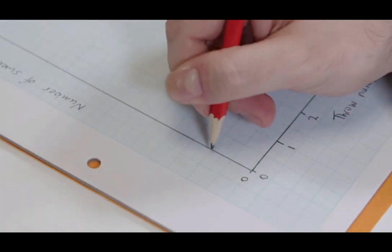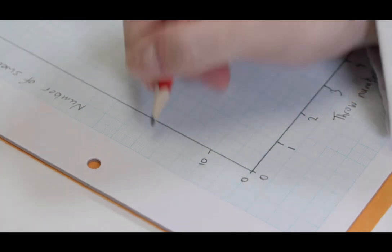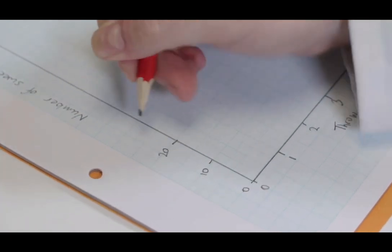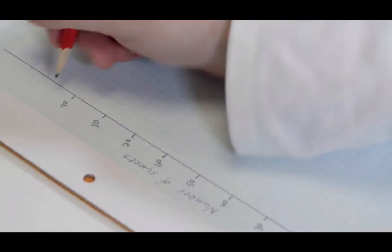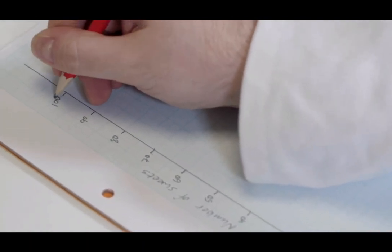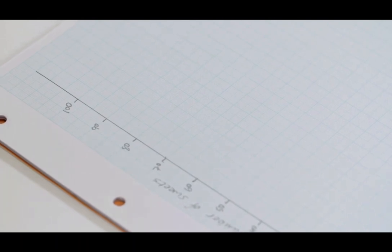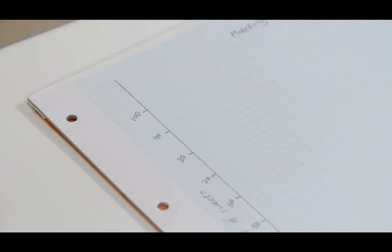The y-axis should start at zero as the experiment ended with all sweets having decayed. The experiment began with 100 sweets, so the marks up the y-axis should be equally spaced increments of 10 until 100 is reached.